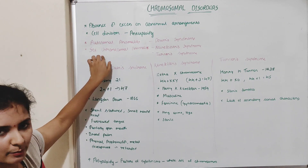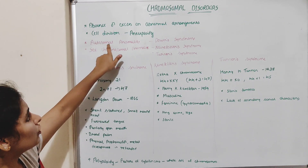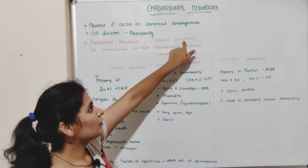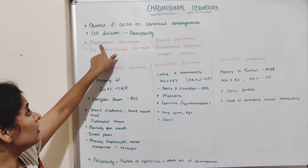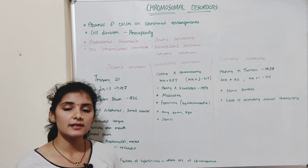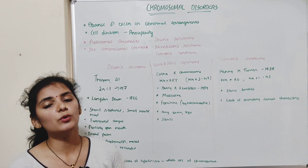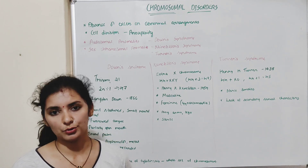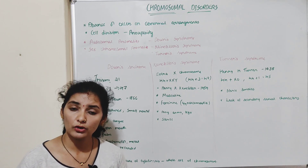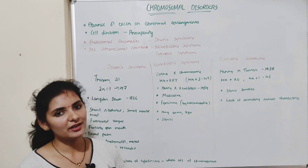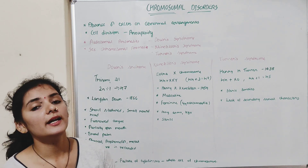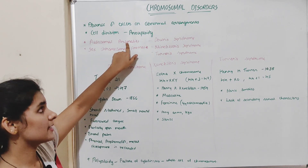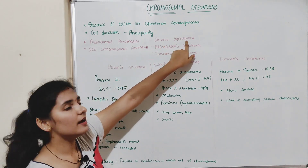These can be studied under two headings: autosomal anomalies and sex chromosomal anomalies. First, autosomal anomalies — this means gain or loss of one or more chromosomes in any of the autosomes. Humans have 44 autosomes, and there can be addition or deletion of one or more chromosomes in any of them. The best example is Down syndrome.